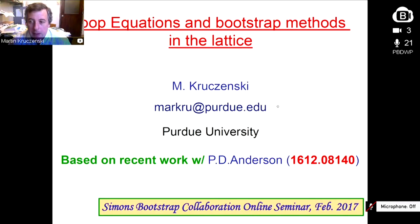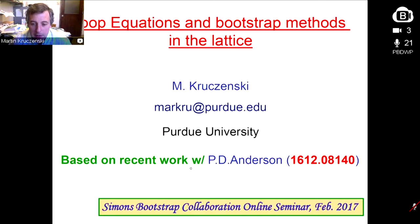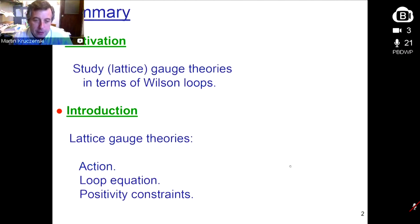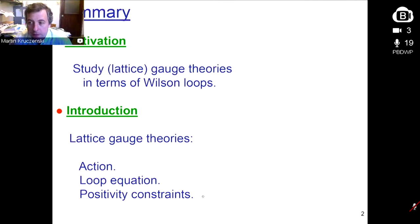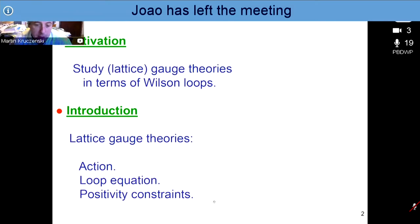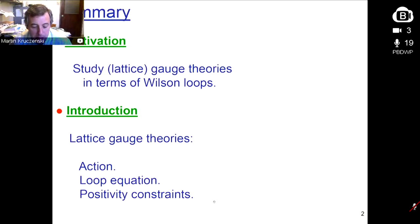Here is my email — if there are any problems, just email me with questions or comments and I'll be happy to answer. This is work that I did with my student Peter Anderson, who is actually here with me, and it appeared in a recent preprint. The summary of the talk is as follows: I'm going to start with some motivation. As I mentioned, we study lattice gauge theories using Wilson loops. Then I'll give an introduction describing briefly lattice gauge theories, the action, the loop equation, and some positivity constraints.